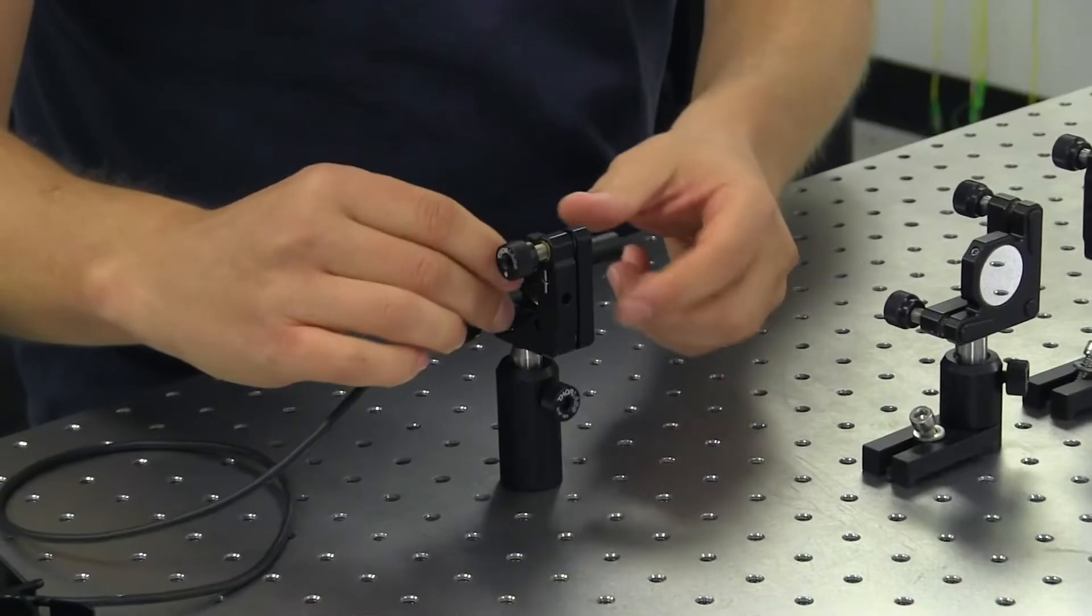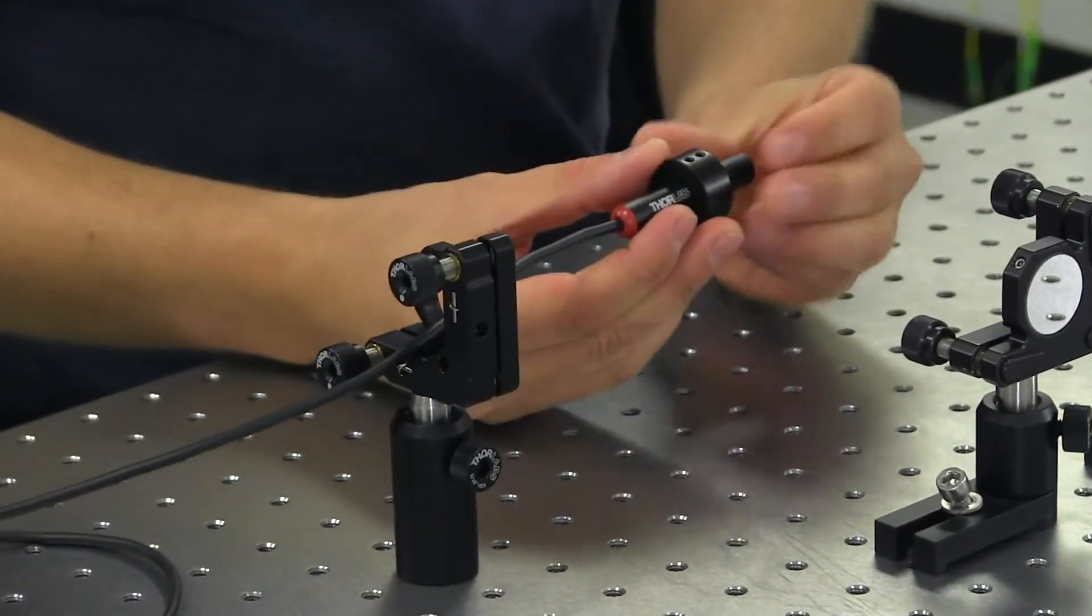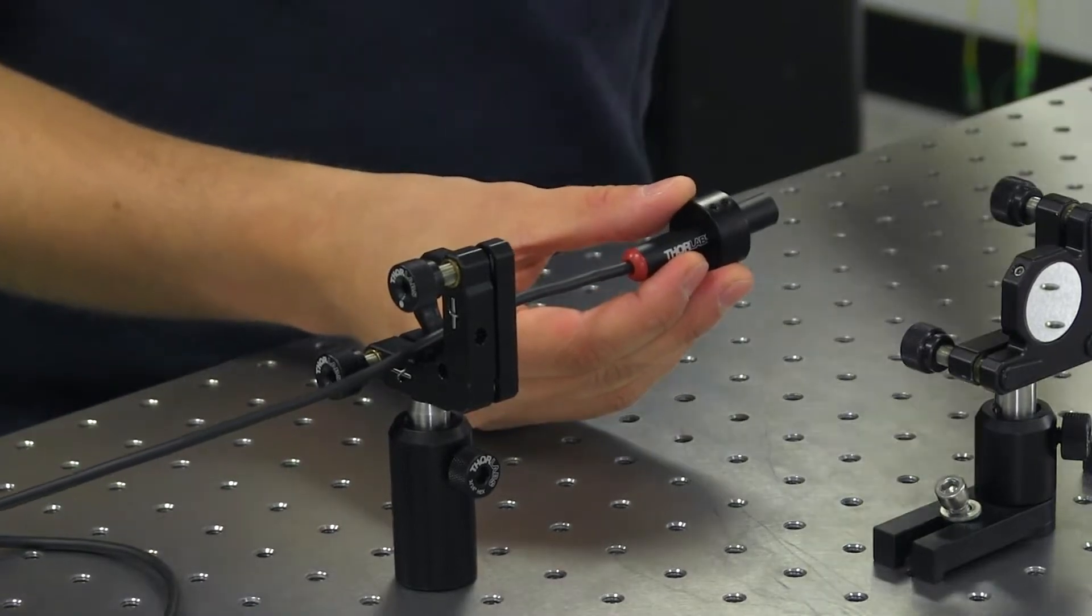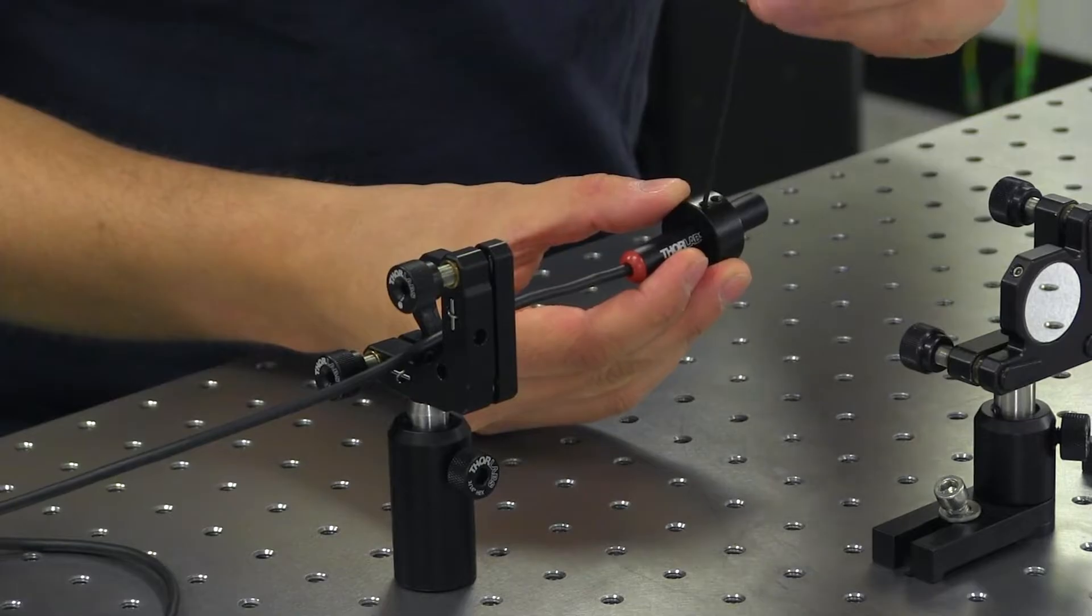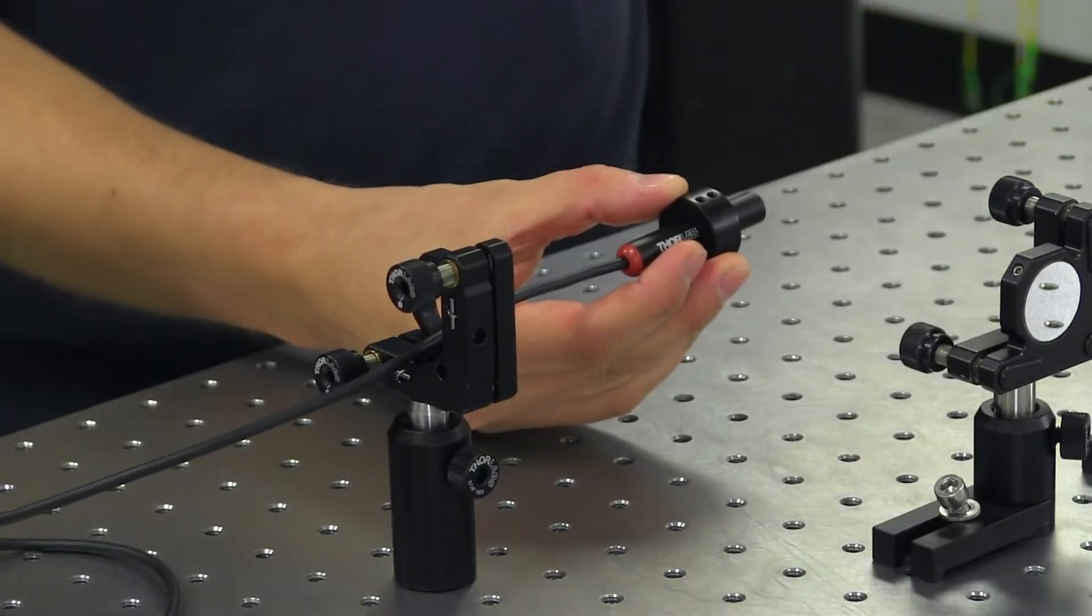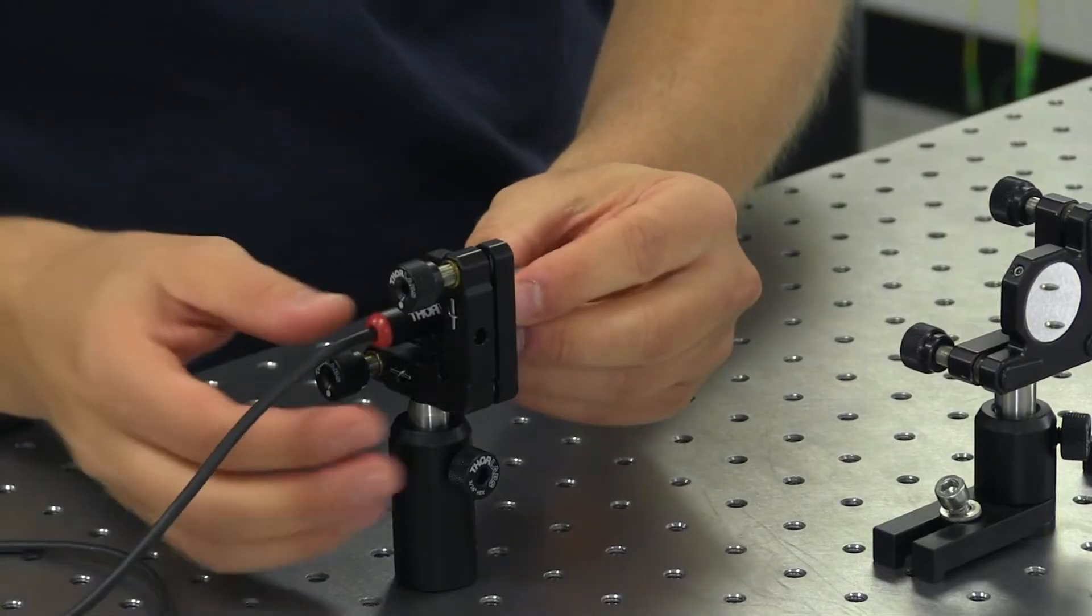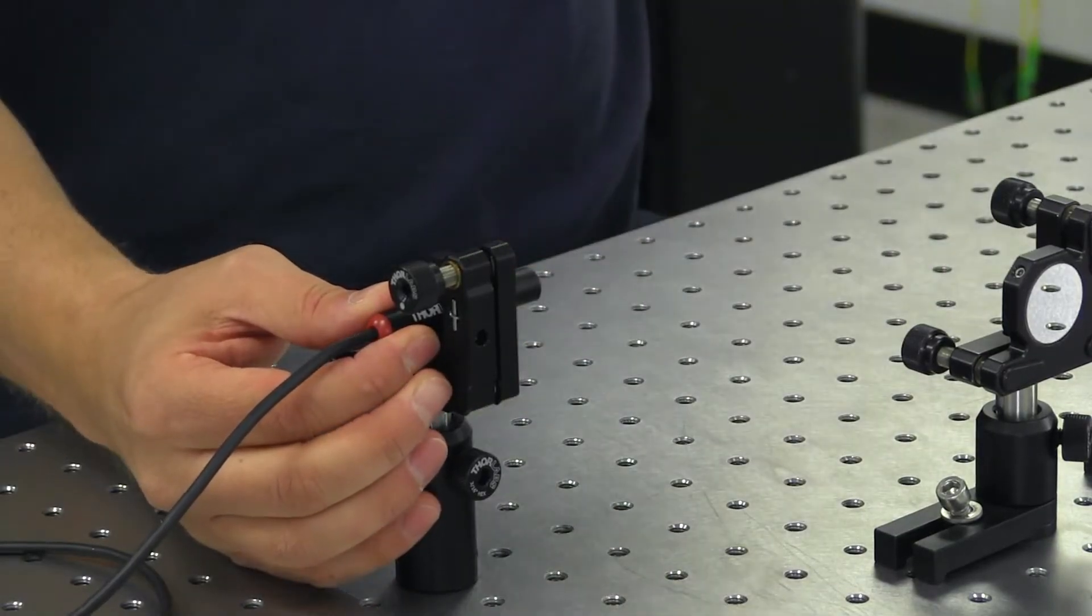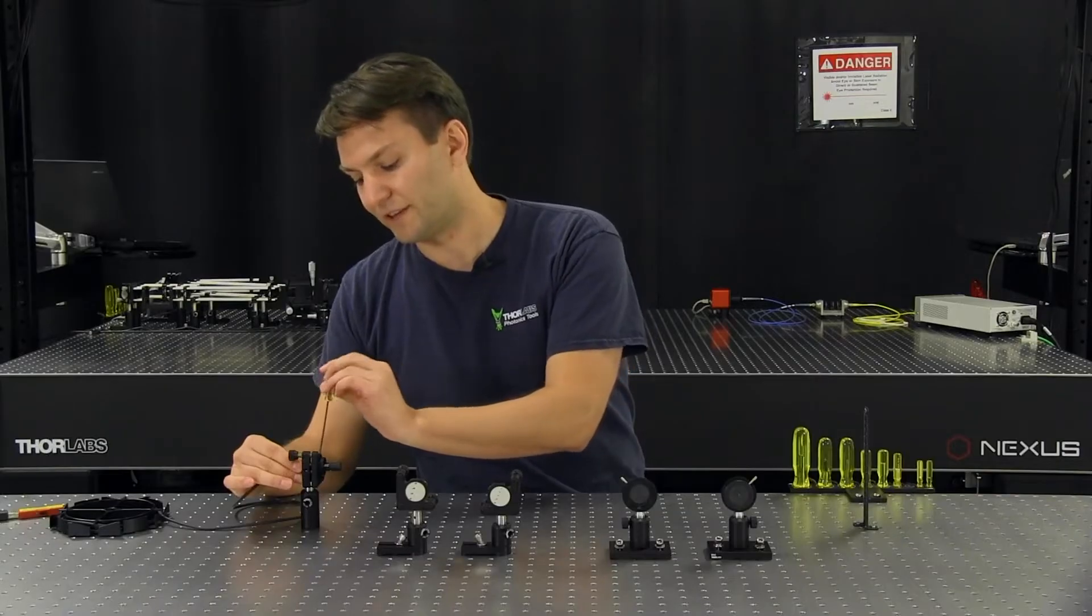So here I'm going to take my laser and mount it into my kinematic mount. Because the outer diameter of the laser is a little small, we're going to use an adapter to bring up the outer diameter to one inch. And we have nylon tip set screws within the adapter and also within the kinematic mount to ensure that we're not marring the surface of the laser or the adapter when we tighten everything in.